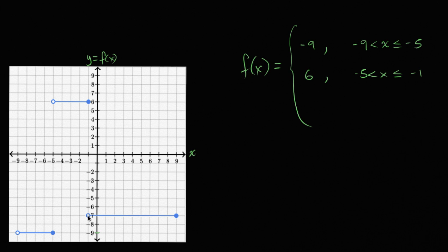Now we have this last interval, going from negative 1 to positive 9. It starts with negative 1 less than x, because we have an open circle right over here — and that's good because x equals negative 1 is already defined in the previous piece — all the way to x is less than or equal to 9. Over that interval, the value of the function is a constant negative 7.